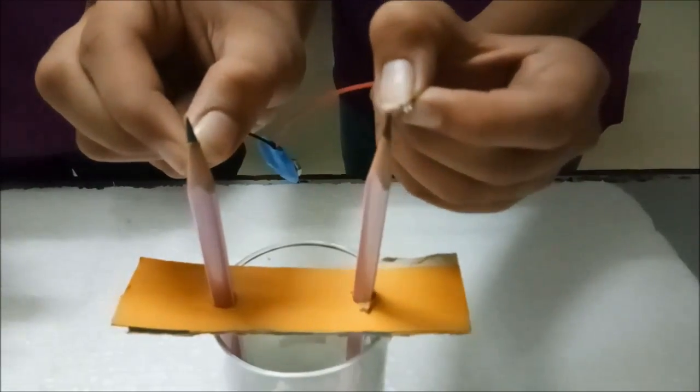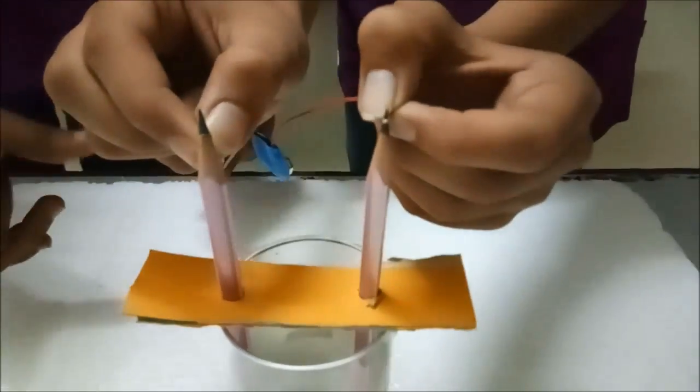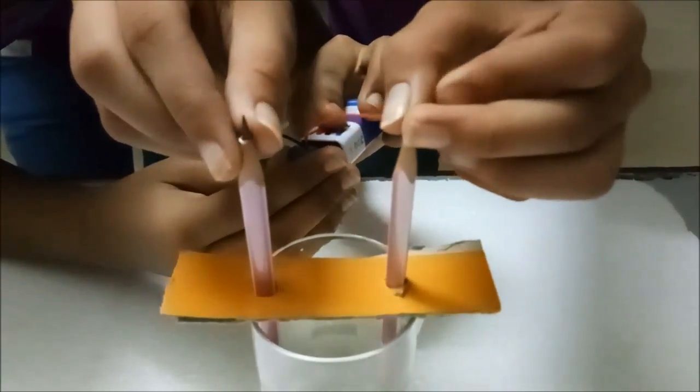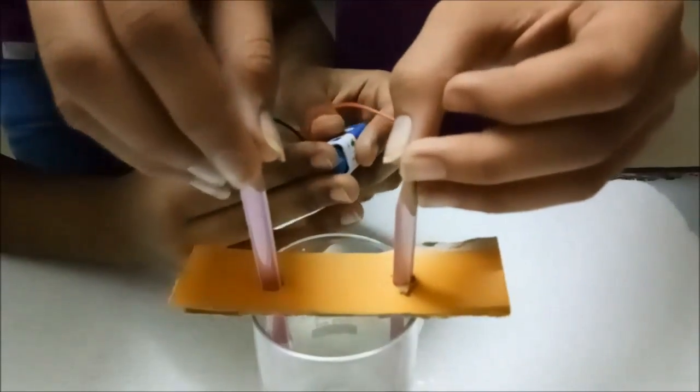As graphite is a good conductor, we will join the bulb with the connecting wires.